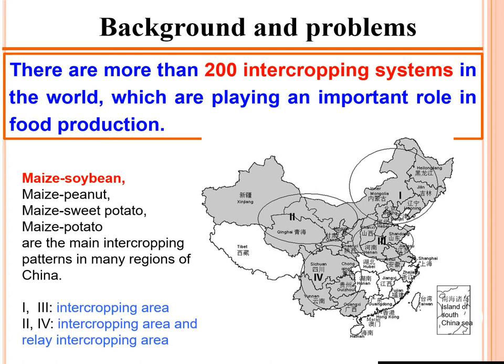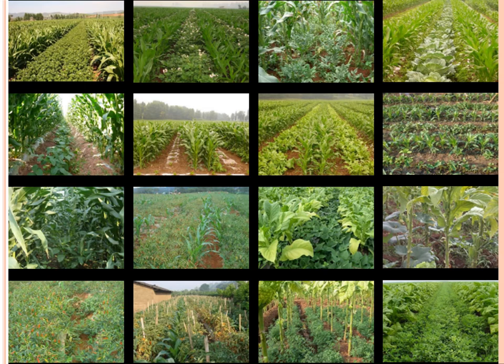There are more than 200 intercropping systems in the world, but four are most important in terms of yield production: maize-soybean, maize-peanut, maize-sweet potato, and maize-potato. This picture shows the intercropping areas and relay intercropping areas across different regions of China, including systems like maize-peanut, maize-potato, maize-cauliflower, and maize-pea.